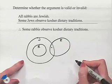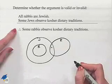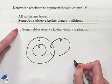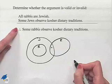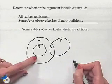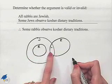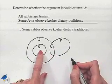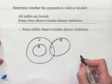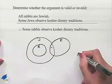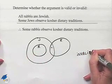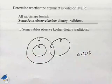Can we conclude that some rabbis observe kosher dietary traditions? The answer is no. We're not sure how far this overlap extends — there's no guarantee that it comes in and overlaps with R. Therefore, we conclude that the argument as given is invalid.